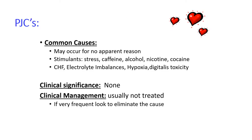Common causes of PJCs include stimulants, CHF, electrolyte imbalances, hypoxia, or digitoxicity — and sometimes they occur for no apparent reason. An irritable area within the junction can trigger a premature beat, as the heart responds to the fastest and strongest impulse. Usually PJCs carry little clinical significance. Management typically involves no treatment unless they are very frequent, in which case the underlying cause should be identified and eliminated.